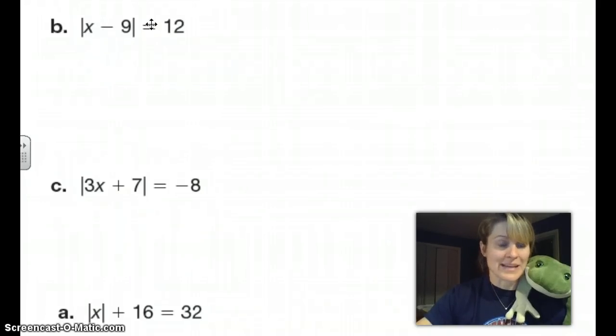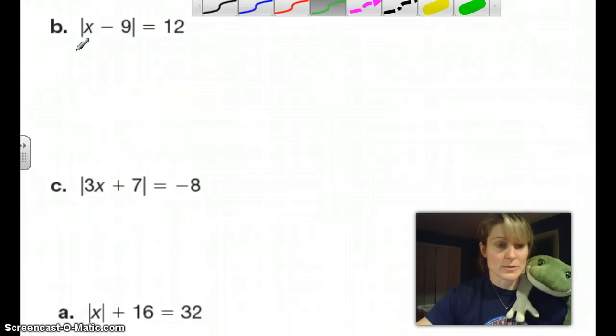Looking at this, you could probably do this in your head. What minus 9 equals 12? You probably came up with 21. 21 minus 9 equals 12. We can also have a negative number in here. What negative number minus 9 would equal negative 12? If I put a negative 3 in here, we have negative 3 minus 9 is negative 12, but then the absolute value changes it to positive 12. Because we can put a positive and negative number in here, we're going to have two answers when we solve these absolute value inequalities.